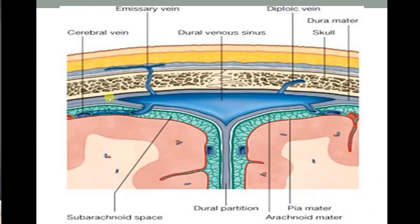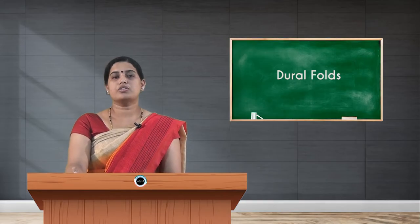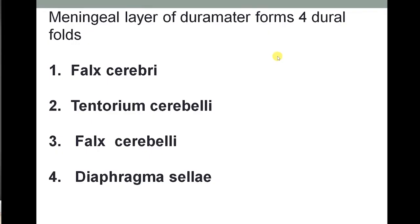Here the layers are shown: you can see the dura mater splitting into two — the endosteal and meningeal layers. The meningeal layer is thrown into a fold between the two halves of the cerebral hemispheres, and in between that space you find the dural venous sinuses. The four dural folds are: falx cerebri, falx cerebelli, tentorium cerebelli, and diaphragma sellae.